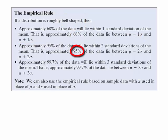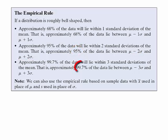Approximately 95% of the data will lie within two standard deviations of the mean. That is, approximately 95% of the data lie between the mean minus two standard deviations and the mean plus two standard deviations. Approximately 99.7% of the data, or just about all the data, will lie within three standard deviations of the mean — between the mean minus three times the standard deviation and the mean plus three times the standard deviation.